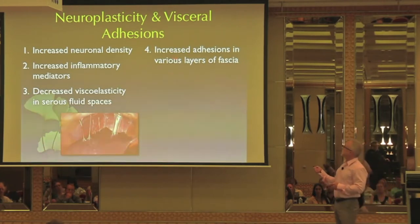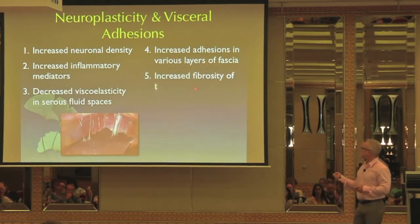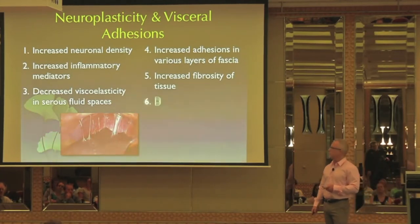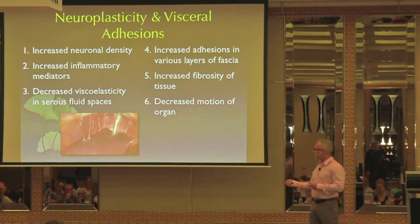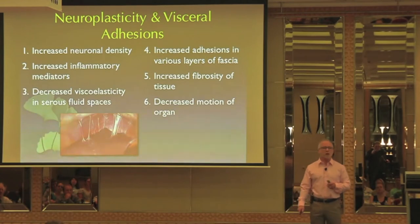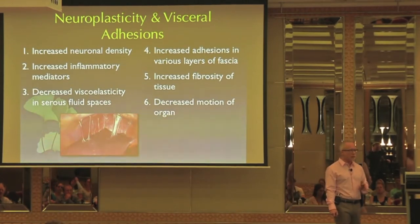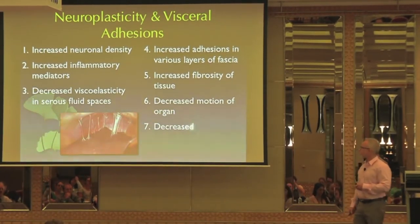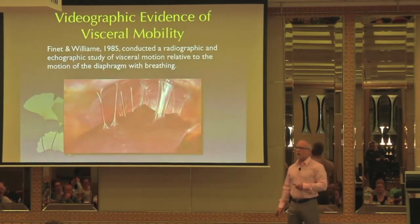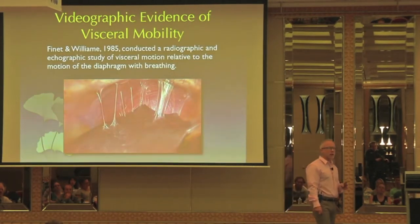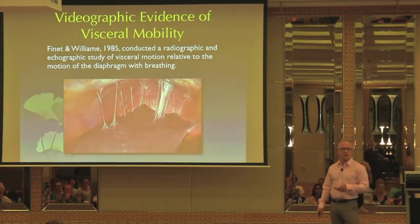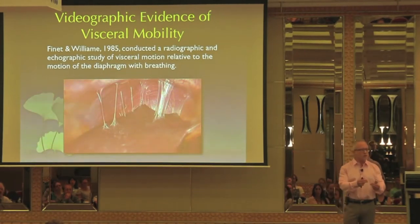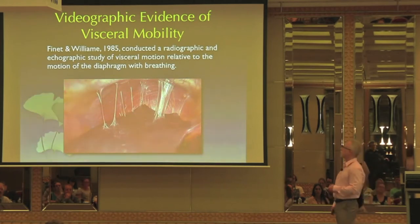You can feel a decrease in viscoelasticity, an increase in the fibrosity of the tissues, a decreased motion of the organ. If it's stuck to the parietal peritoneum, it's clearly not moving very well. Decreased function of the organ. As Jean-Pierre says, an organ with good motion has physiologic function. So if it can't move, it can't function — it's not going to function as well.